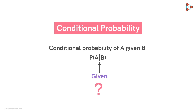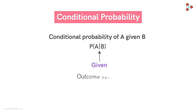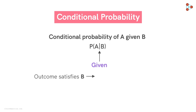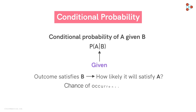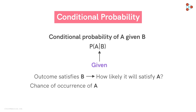Now, what does this probability mean? It means, given that the outcome of a random experiment satisfies B, how likely is it that it will also satisfy A? In other words, what are the chances of the occurrence of event A when given that event B has already occurred?